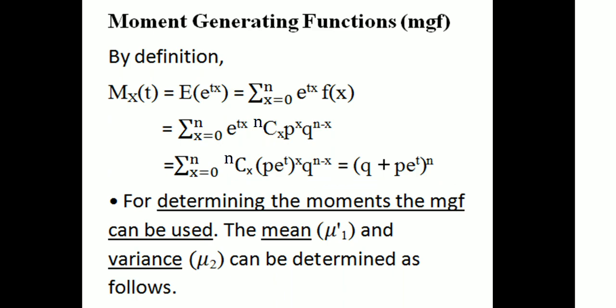That is the moment generating function — the expectation of e raised to tx of the binomial distribution — and the result is equal to q plus p times e raised to t, all raised to n.